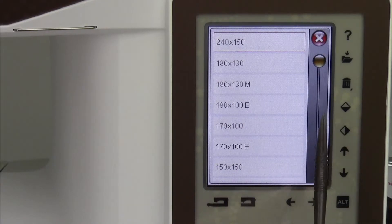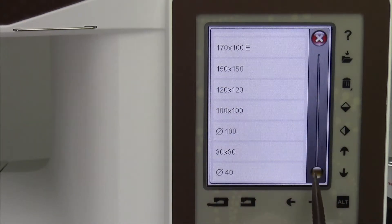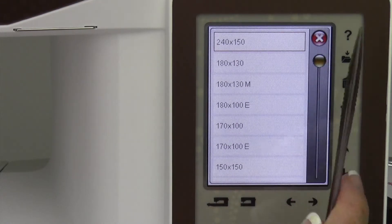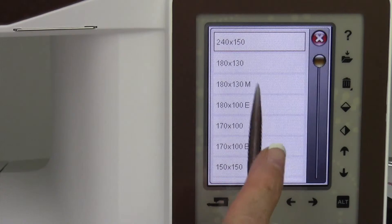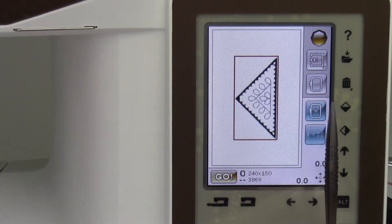Let's look at the hoop options. On this machine, it will have every hoop available, but there's an easier way than always jumping around telling it you only have the 240 by 150 hoop.